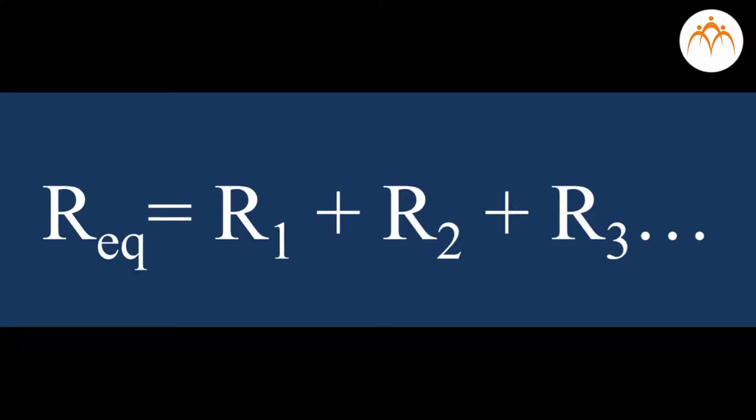The equivalent resistance of a circuit is the amount of resistance that a single resistor would need in order to equal the overall effect of the collection of resistors present in the circuit. For series circuits, it is the summation of all resistors connected: R equivalent equals R1 plus R2 plus R3 and so on.